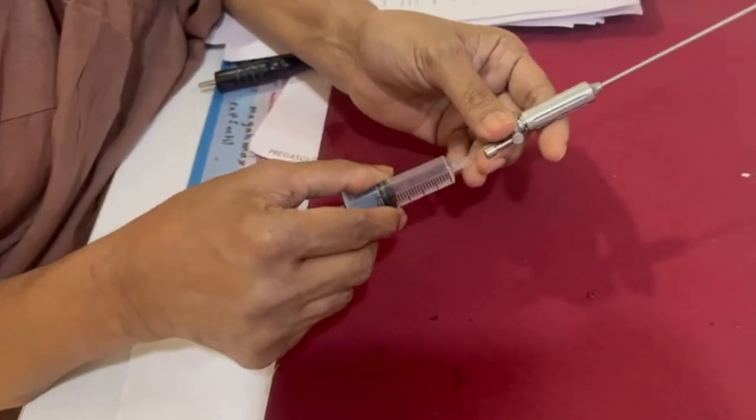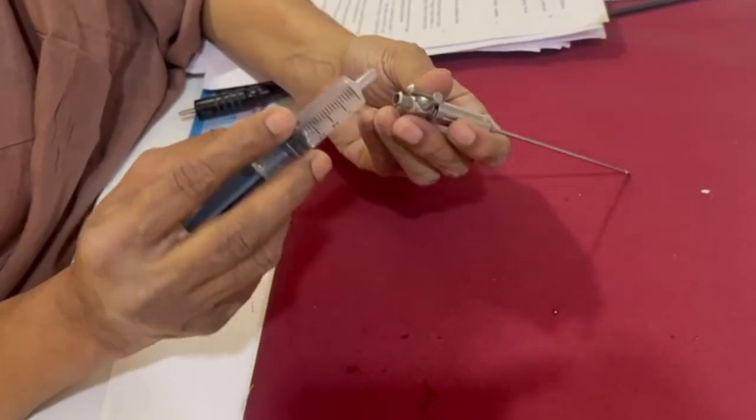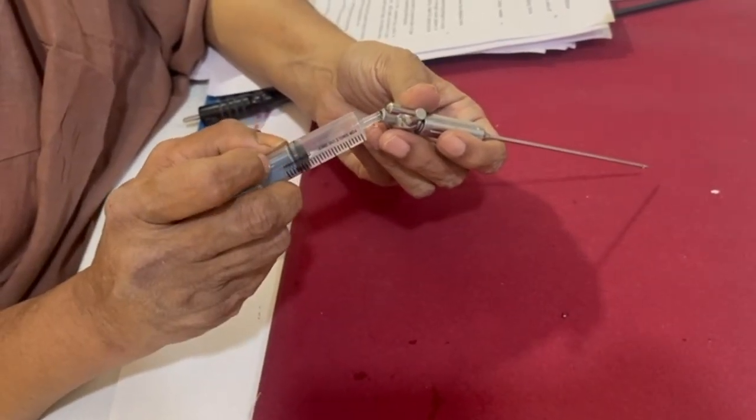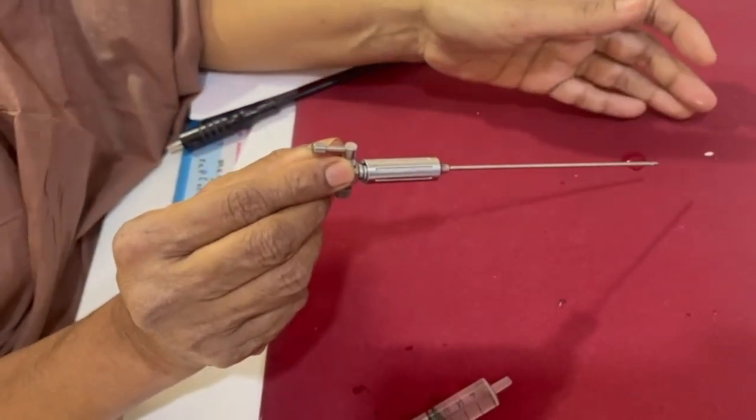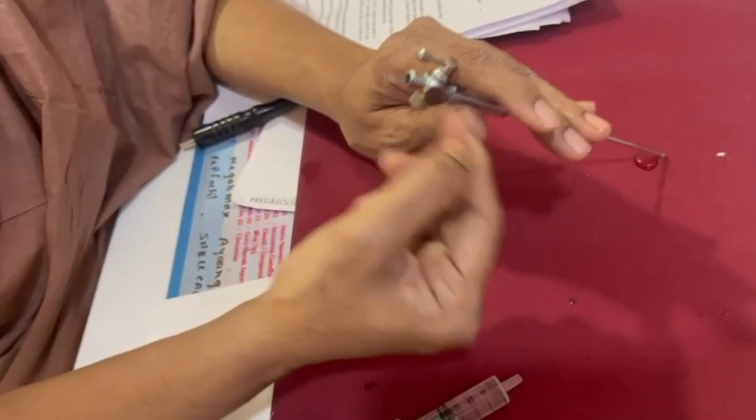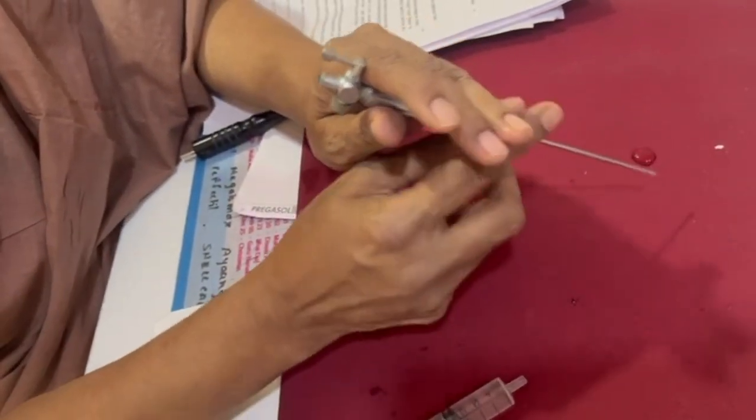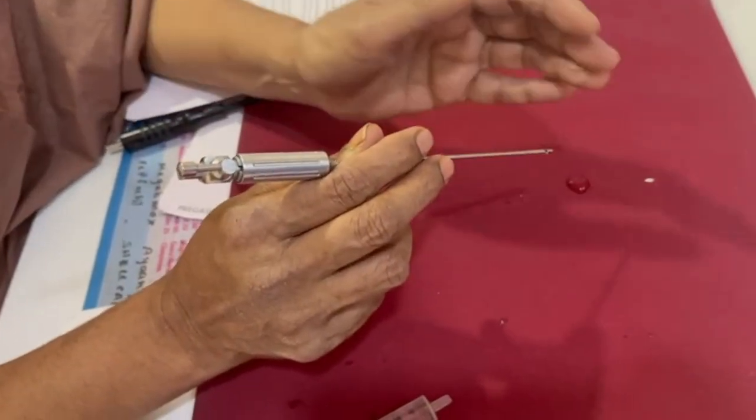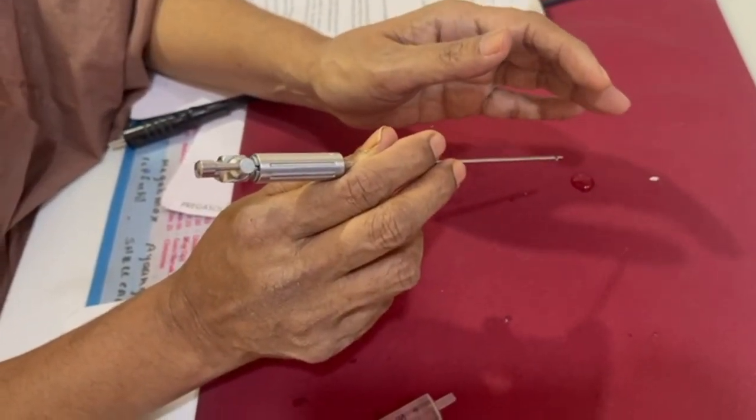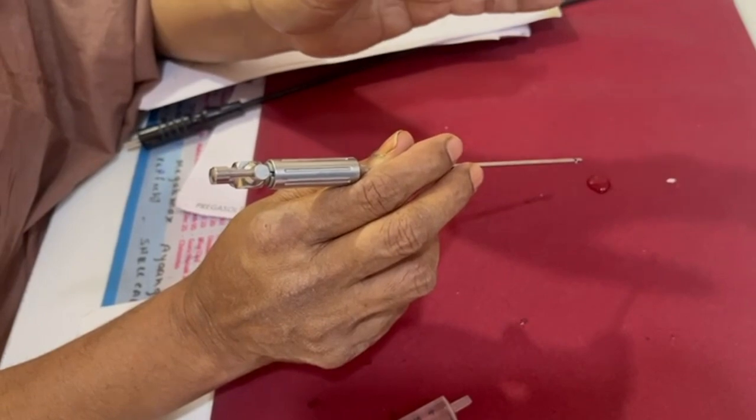The third test would be the hanging drop test. You just leave a drop of saline over the hub, and when you lift the abdominal wall, because of the negative pressure the drop gets sucked in. That is another test which tells us that we have placed the needle inside the peritoneal cavity.